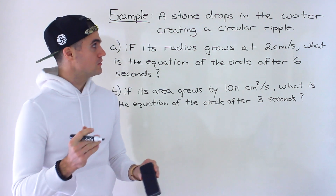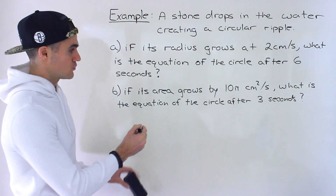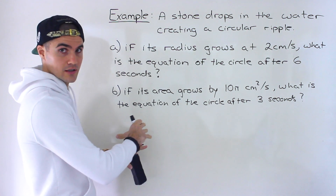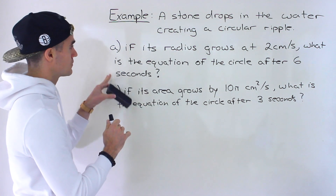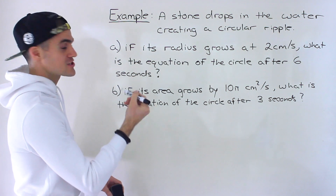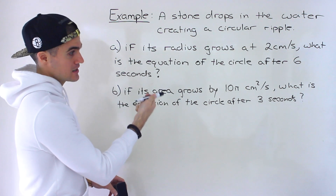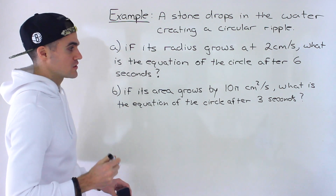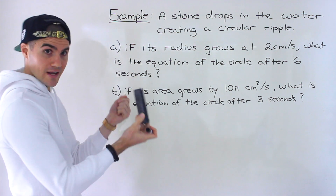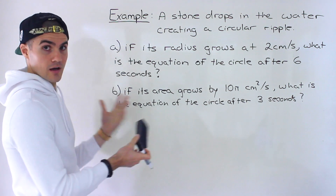We have a stone that drops in the water, creating a circular ripple. The stone drops, waves form in a circular shape, and that circle is getting larger and larger. We have two scenarios: in Part A, if the radius grows at two centimeters per second, what is the equation of the circle after six seconds? In Part B, if its area grows by 10π centimeters squared per second, what is the equation of the circle after three seconds?